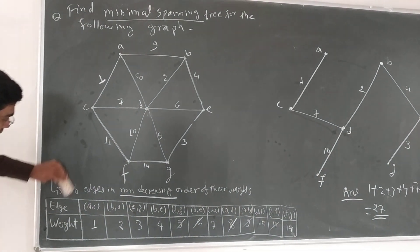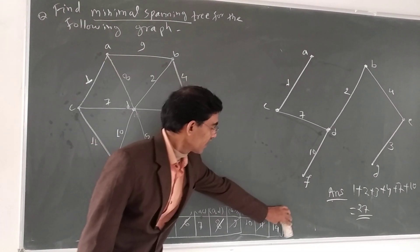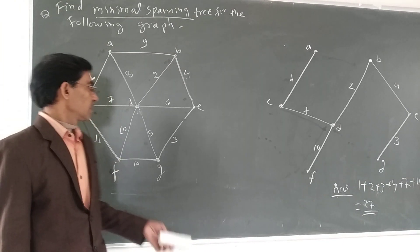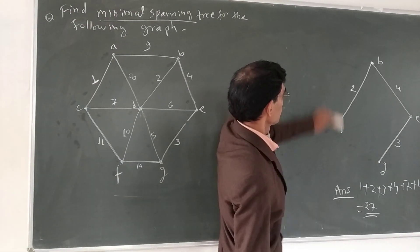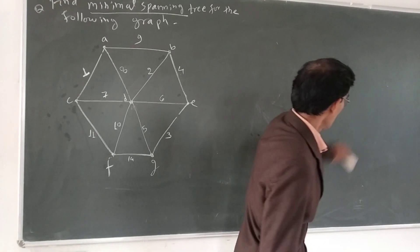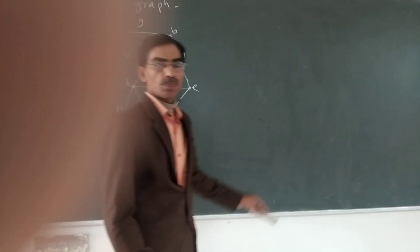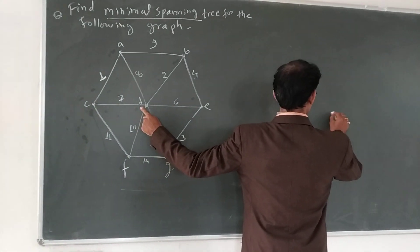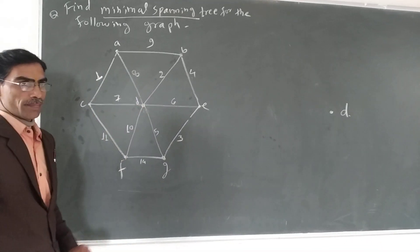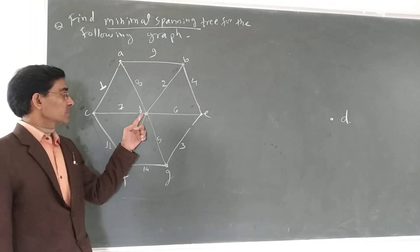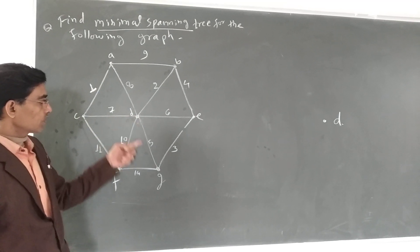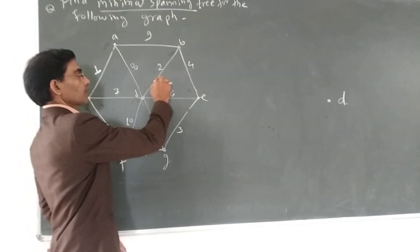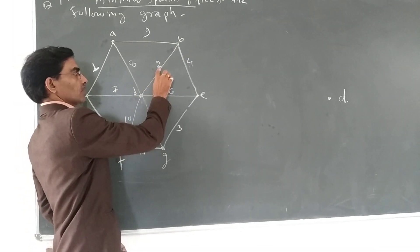According to Prim's algorithm, edges की weight list की जरूरत नहीं है। हम graph के किसी भी vertex से start कर सकते हैं — मैं D से start करना चाहता हूं। D के साथ जो edges हैं उनके weights 2, 6, 5, 10, 7, 8 हैं। इन सब में minimum edge DB है जिसका weight 2 है, तो हम DB को choose करते हैं।